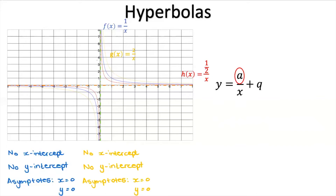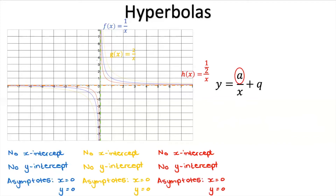Still no x-intercept, no y-intercept, and the asymptotes are still x = 0 and y = 0. So we can see that the bigger the a value, the further away it pushes the graph from the axes, and the smaller the a value, the closer the graph gets to the axes — but they still don't cross either axis. The a value tells us about the shape of the graph.